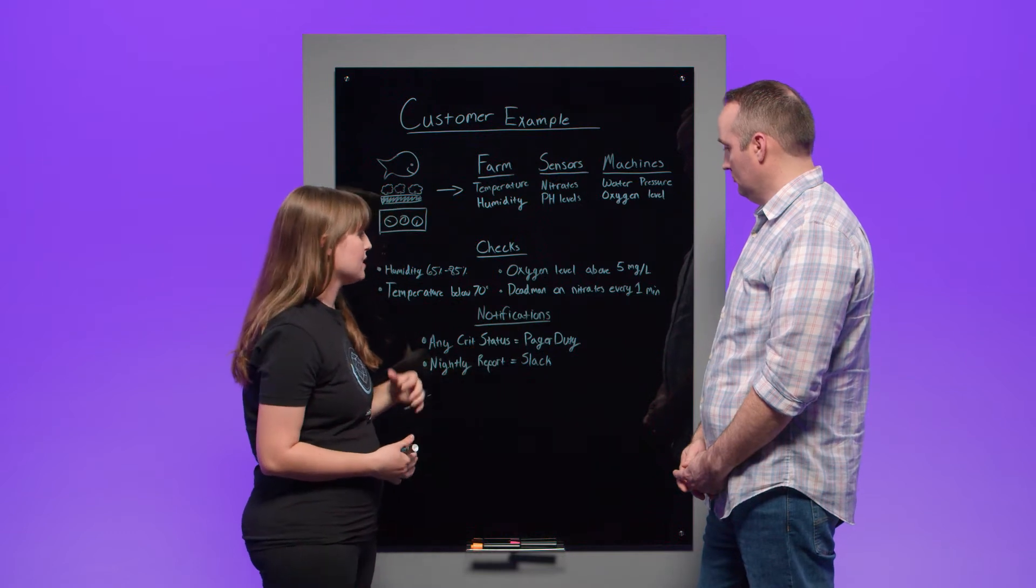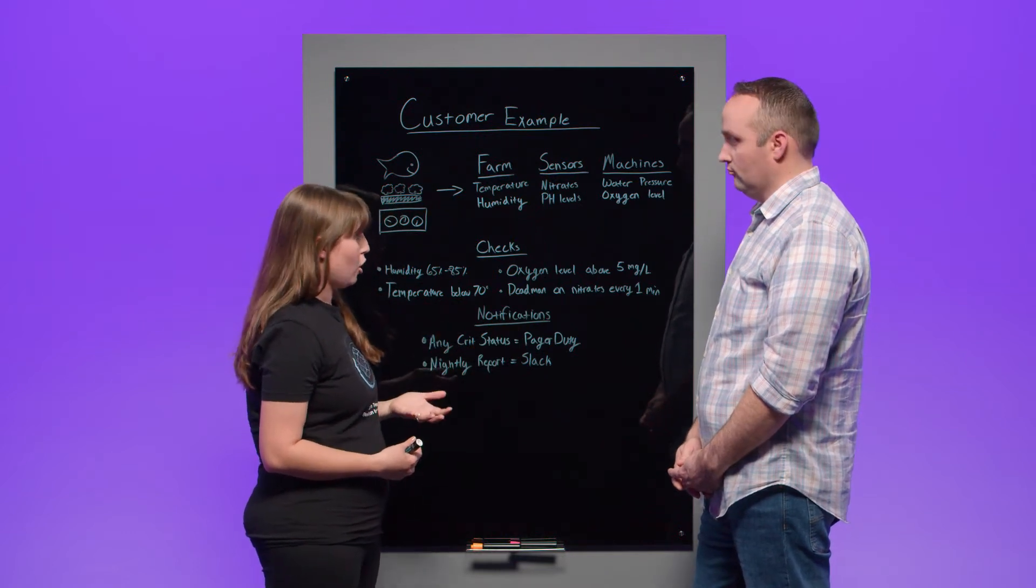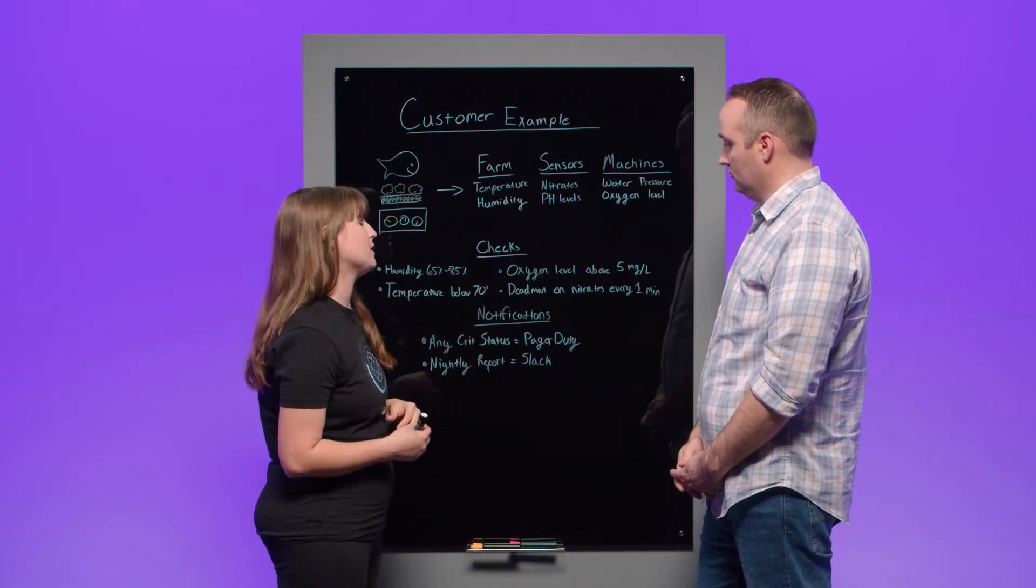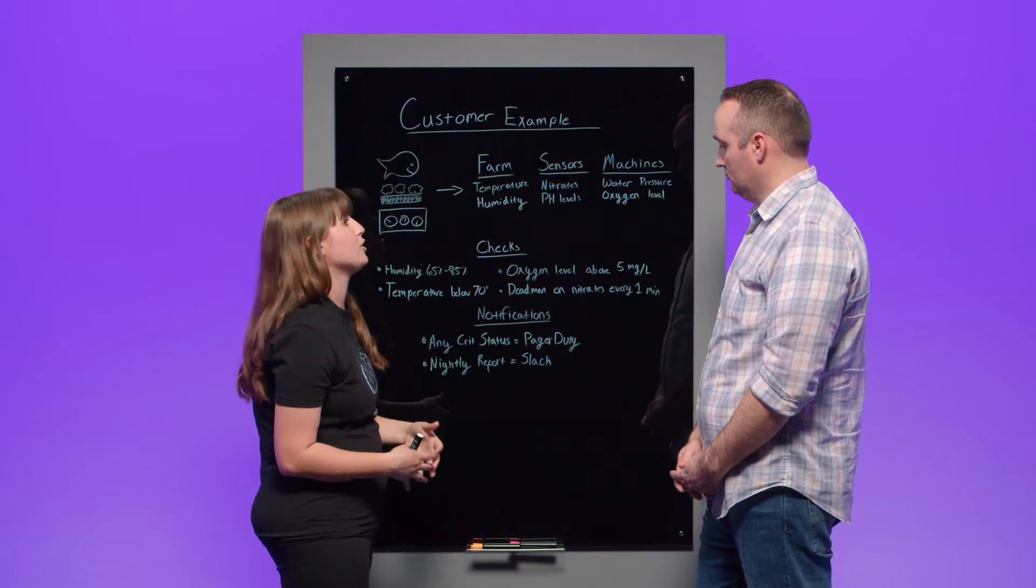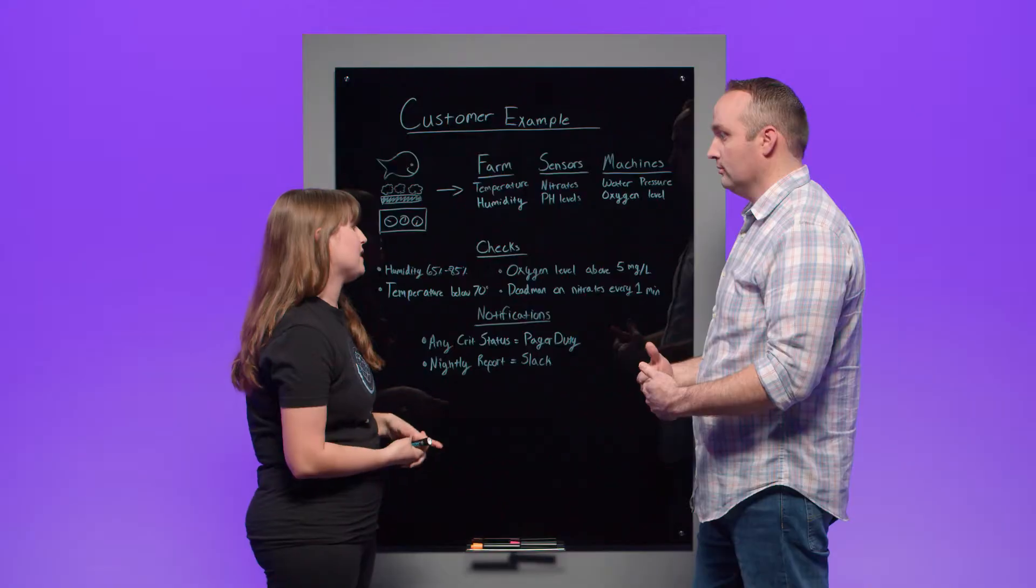So I've just put down a few examples here just to give a rough idea. Obviously, they have more checks than I'm listing here. It would take up the entire board otherwise. But one thing to know is they like to make sure that their humidity is in a certain range, that their temperatures are below a certain amount, and that their oxygen level stays above five milligrams a liter. These are all three examples of our threshold checks.